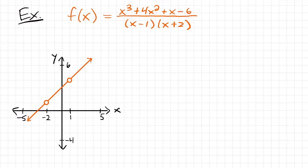Particularly, we have a hole at x equals 1, which corresponds to this part of the function, and we also have a hole at x equals negative 2, which corresponds to this part of the denominator. If we were to plug 1 or negative 2 into this function, we would find that our denominator would be 0, thus giving us an undefined value, and therefore there's no actual value for those points on this graph.